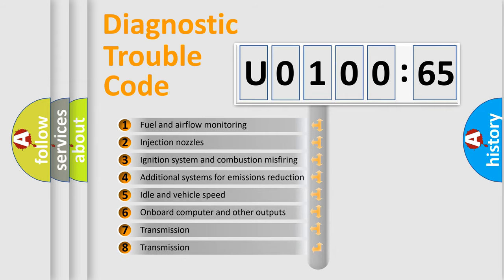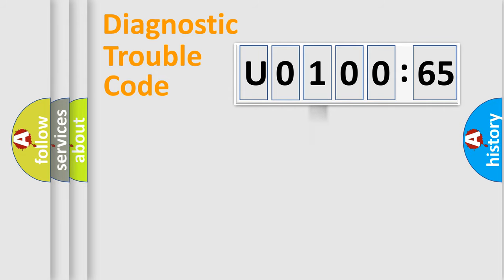The third character specifies a subset of errors. The distribution shown is valid only for the standardized DTC code. Only the last two characters define the specific fault of the group.